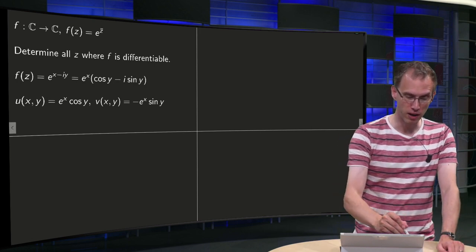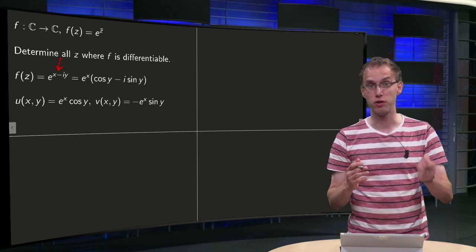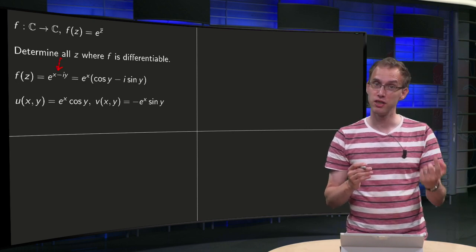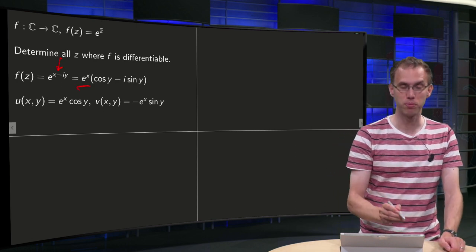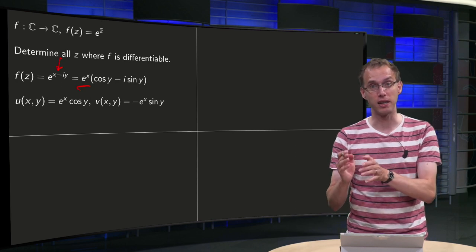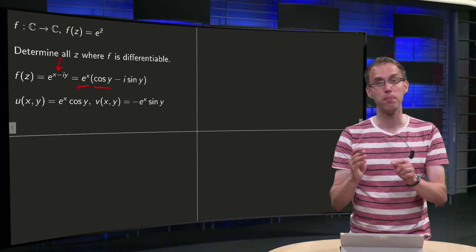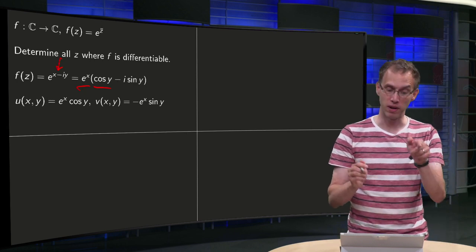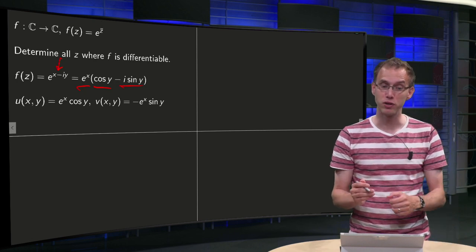We know z̄ equals x minus iy, so f(z) equals e^(x - iy) equals e^x times e^(-iy), which equals e^x times (cos(-y) + i sin(-y)). Since cos(-y) = cos y and sin(-y) = -sin y, we can read out what u and v are.